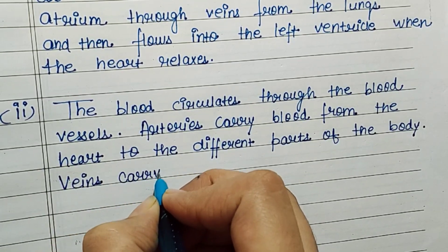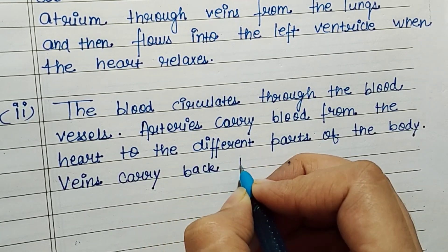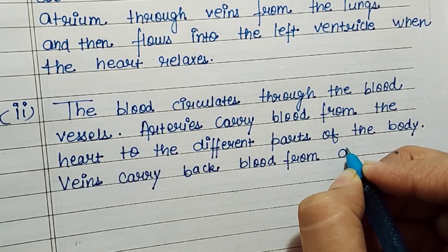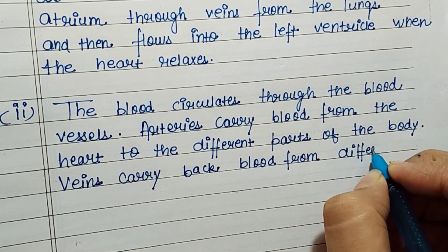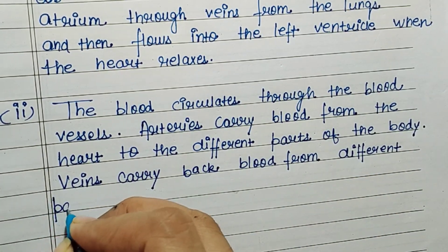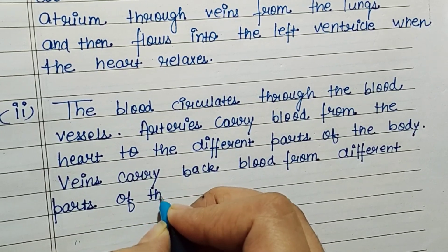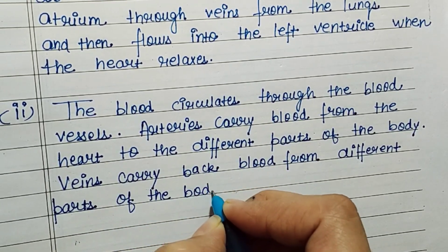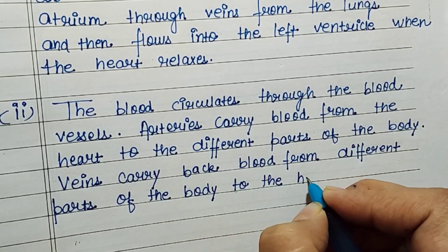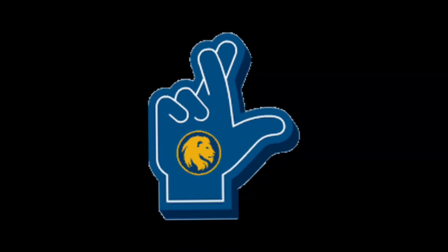The blood circulates through the blood vessels. Arteries carry blood from the heart to the different parts of the body. Veins carry blood back from different parts of the body to the heart. Hope you liked this video.